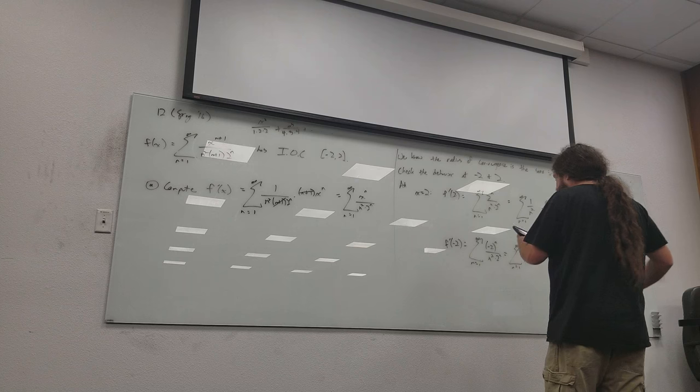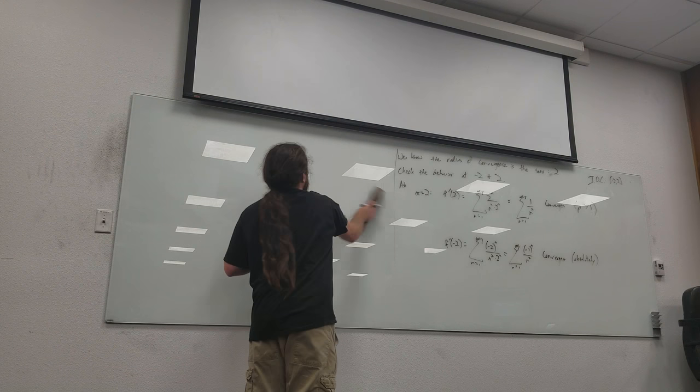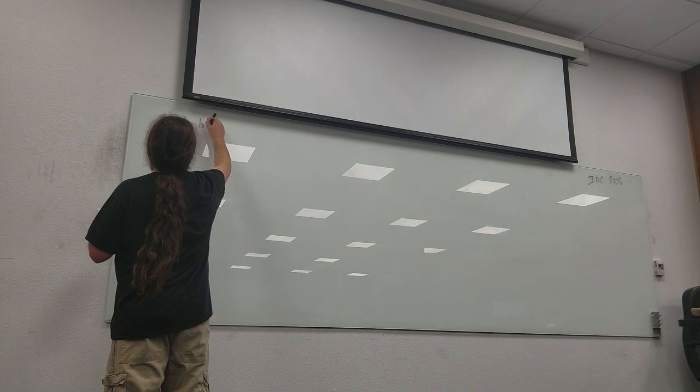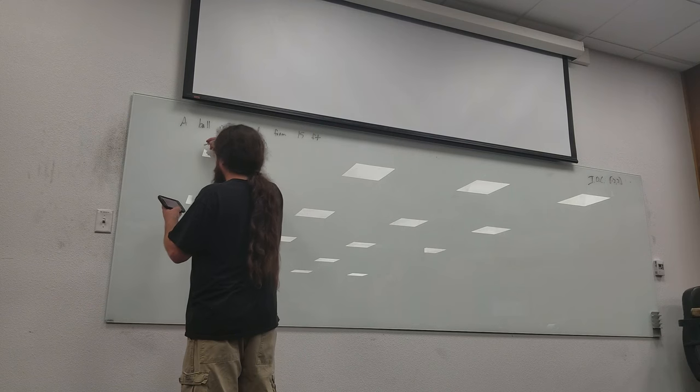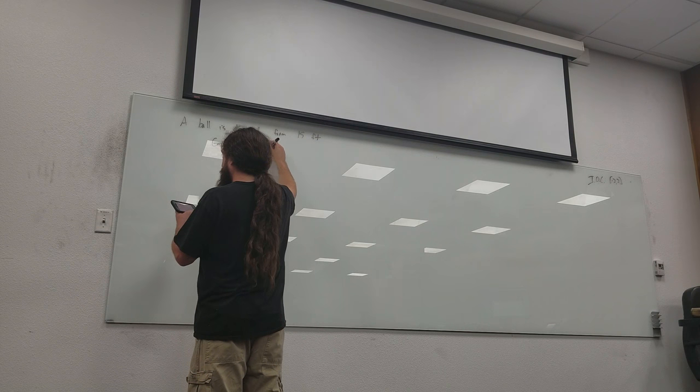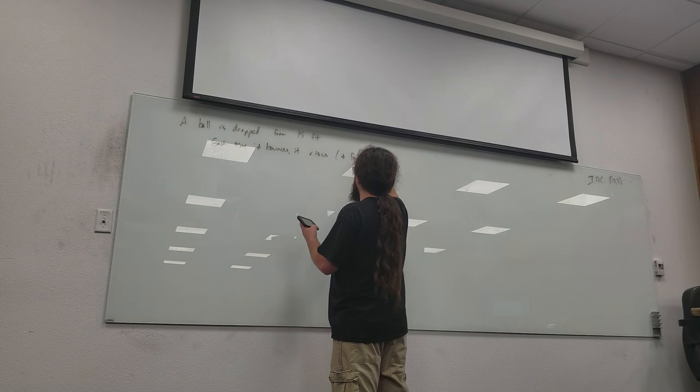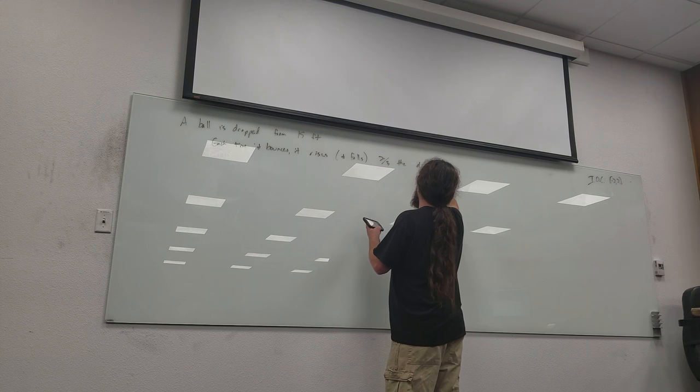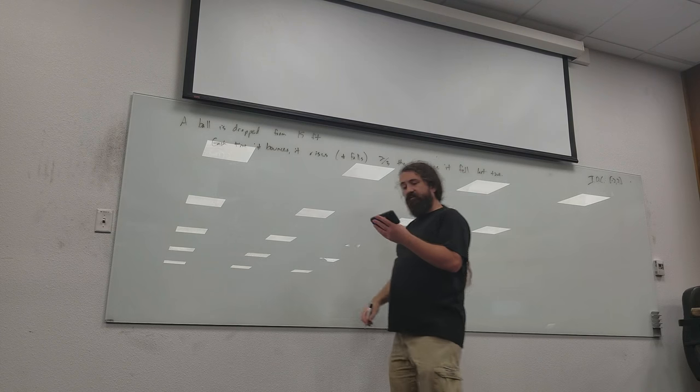Yeah, okay. A ball is dropped from a height of 50 feet. Each time the ball bounces, it rises and falls two-thirds of the distance it previously fallen. And what you want to figure out is find the total distance traveled by the ball.